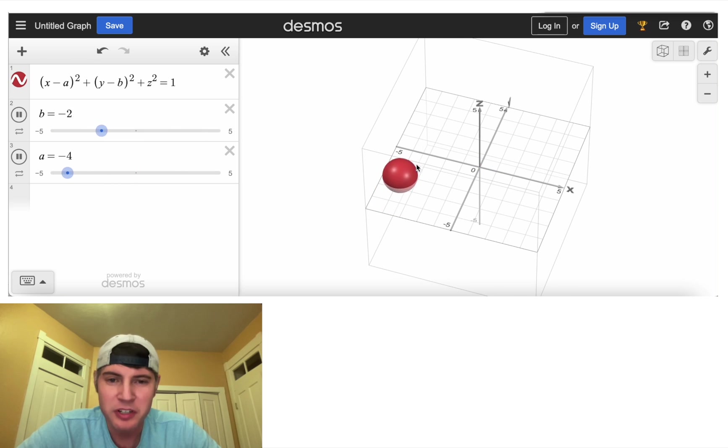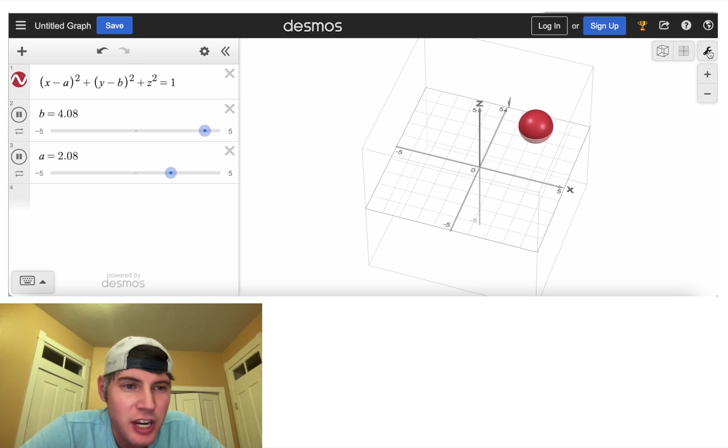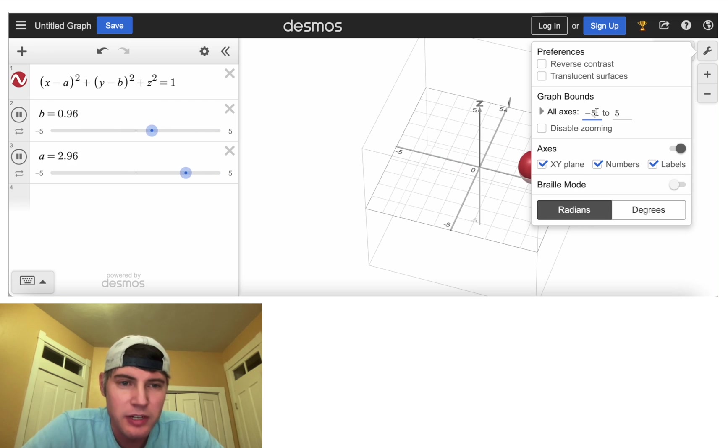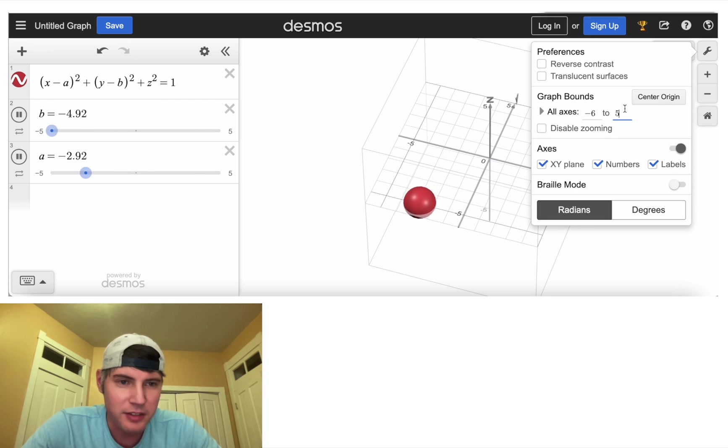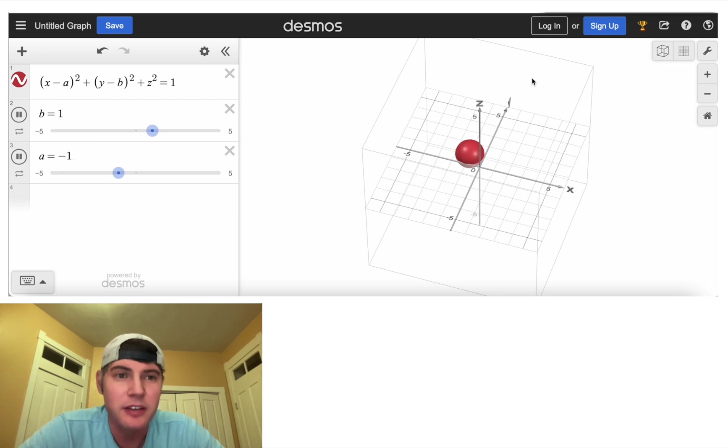If we want to stop it from leaving, we can change the axes. And let's do negative six to positive six. And now it doesn't leave the cube anymore. It just bounces off the edges. And that's because this is going from negative five to five, and then we have a radius of one. So we want our axes to all go to six.